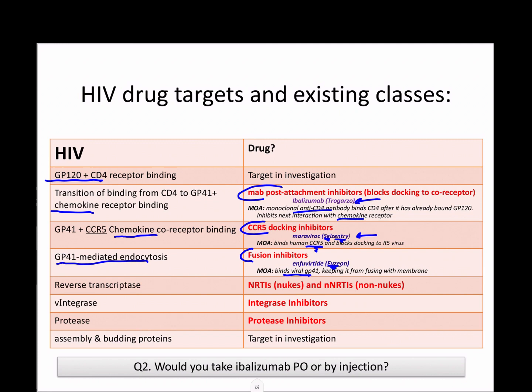The three main drug classes are the most commonly used and you'll be responsible for the drugs within them: reverse transcriptase inhibitors — both nucleoside analog (NRTIs) and non-nucleoside analog (NNRTIs) types — inhibitors of viral integrase, and inhibitors of viral protease. Assembly and budding step inhibitors are also under investigation.